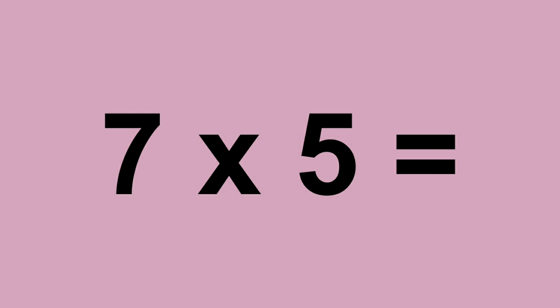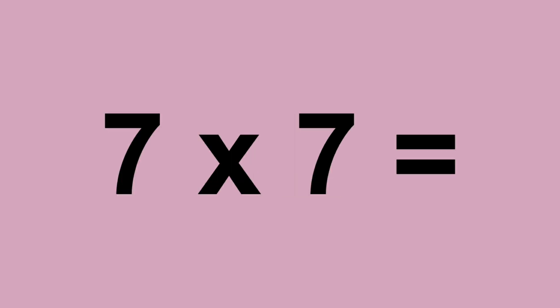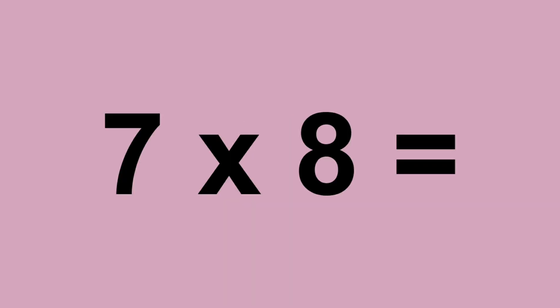Seven times five equals thirty-five. Seven times six equals forty-two. Seven times seven equals forty-nine. Seven times eight equals fifty-six.